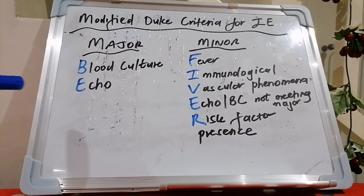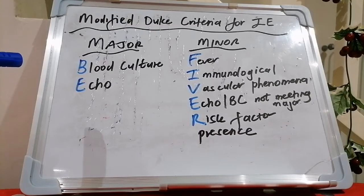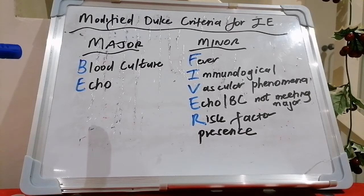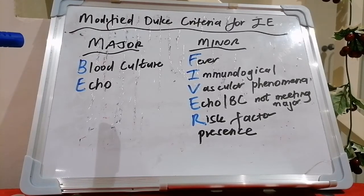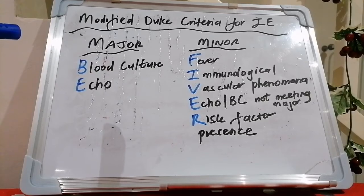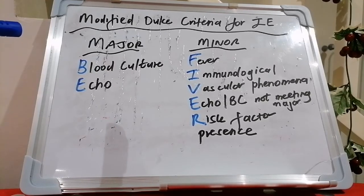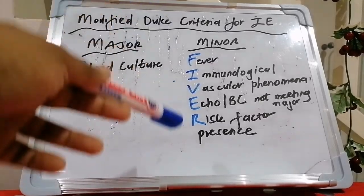In terms of imaging and echo criteria, echo is positive for endocarditis in the way of vegetation, abscess, pseudo-aneurysm formation, intracardiac fistula, valvular perforation or aneurysm, or new partial dehiscence of a prosthetic valve. They've also added FDG-PET criteria and CT criteria as well.